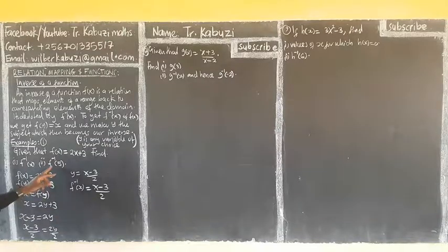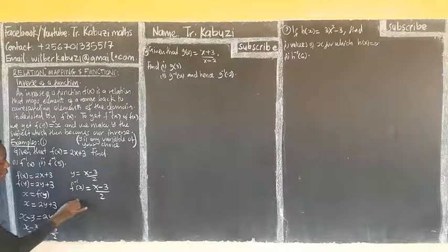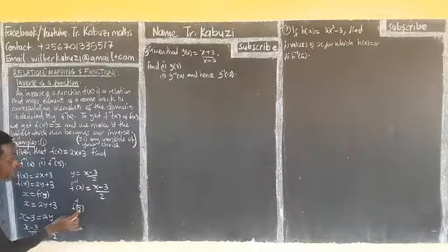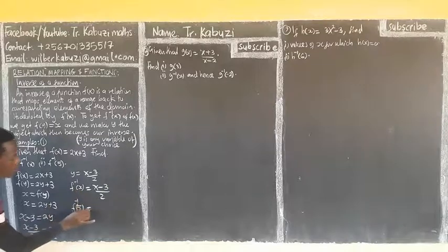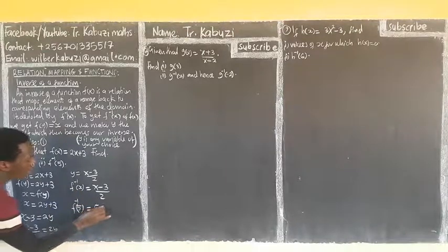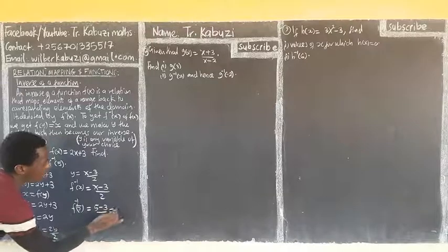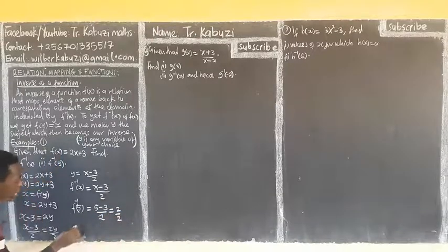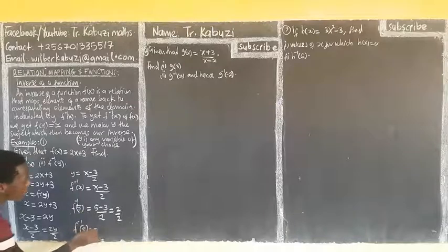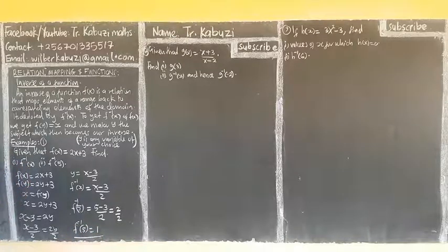Now we want to get f inverse of 5. This shows that where there is x, we put in 5. So this will be now 5 minus 3 over 2, which will be 2 over 2. And so our f inverse of 5 is 1.